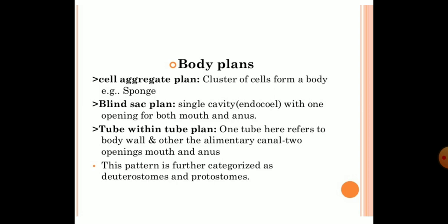In the coming session we'll study Porifera in detail and I'll show you the structure of sponges. The tube-within-tube plan has one tube referring to the body wall and another referring to the alimentary canal, with two openings — one is the mouth and another is the anus. This is how the body plans are constructed.